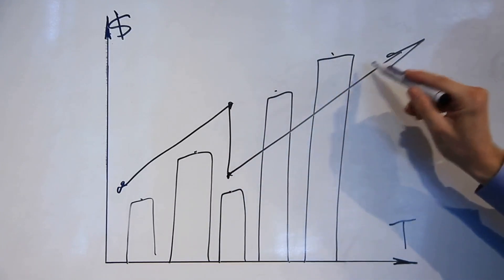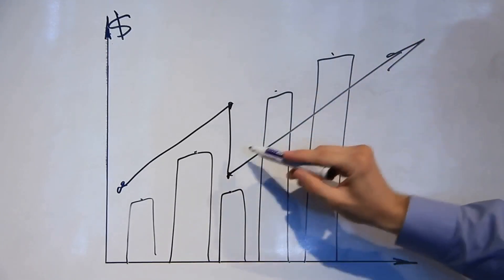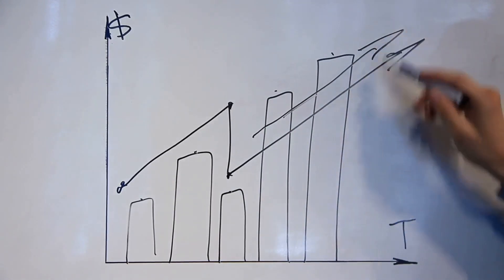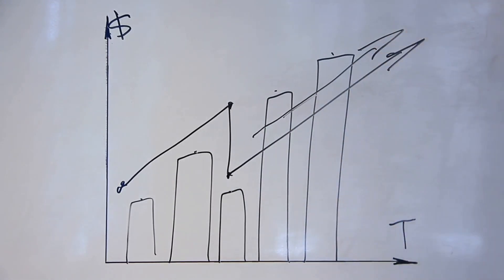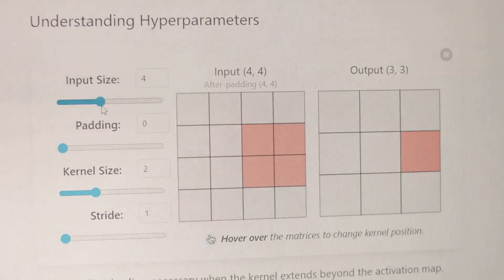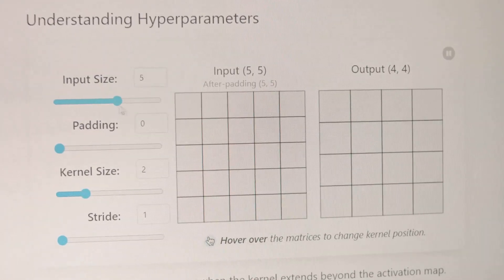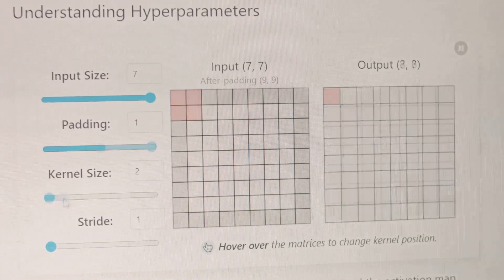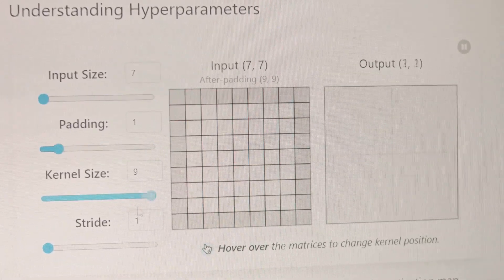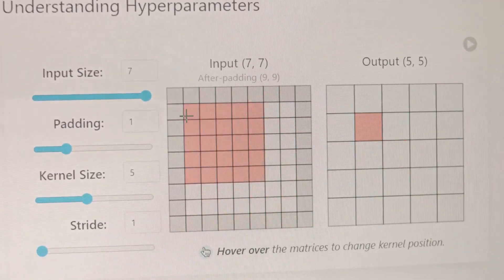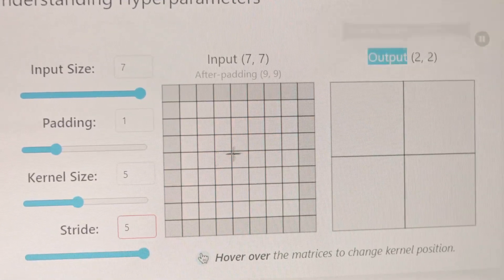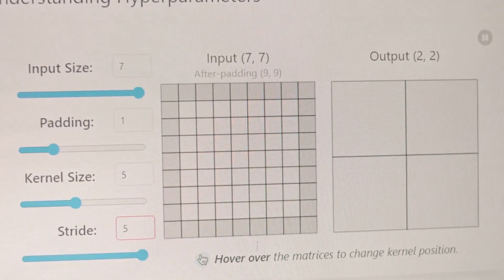Overfitting occurs when a model learns the training data too well, to the point where it struggles with new, unseen data. Bagging helps smooth out these overfitting issues by creating multiple subsets of the original data and running them through the model. This way, the model gets to learn from different perspectives, improving its ability to generalize and hence its overall accuracy.